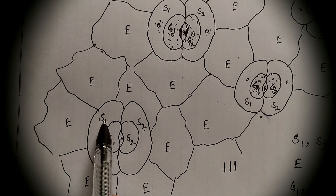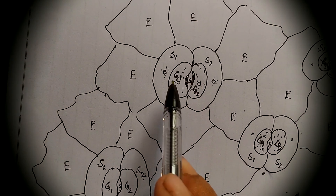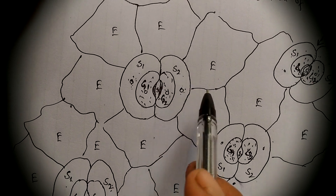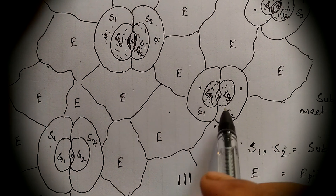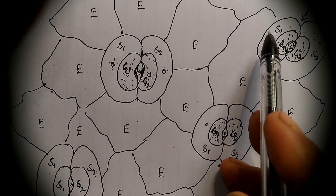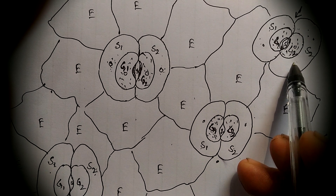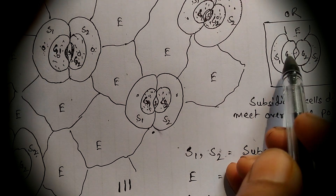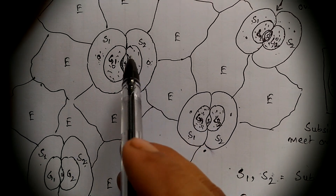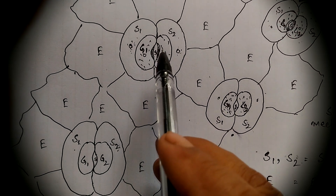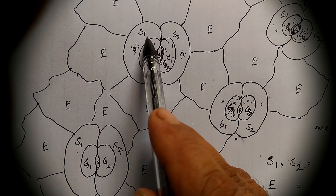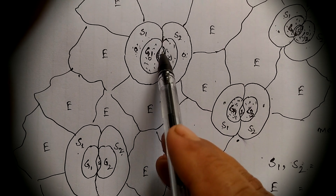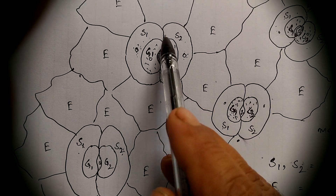In each stoma, the two subsidiary cells are labeled S1 and S2. These two subsidiary cells meet over the pole of the stomata.